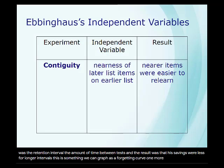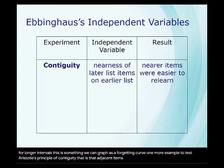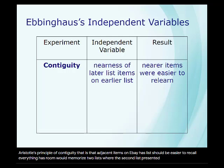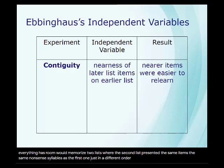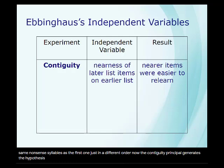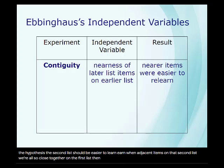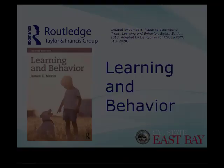One more example: to test Aristotle's principle of contiguity — that adjacent items on Ebbinghaus's lists should be easier to recall — Ebbinghaus would memorize two lists where the second list presented the same nonsense syllables as the first one, just in a different order. The contiguity principle generates the hypothesis that the second list should be easier to learn when adjacent items on that second list were also close together on the first list, compared to when adjacent items on the second list were far apart on the first list. This hypothesis was supported.